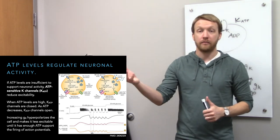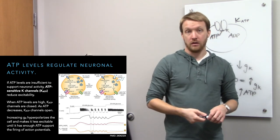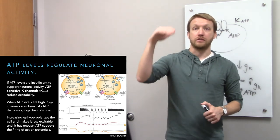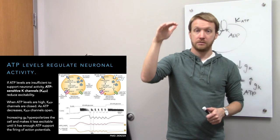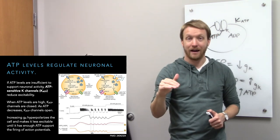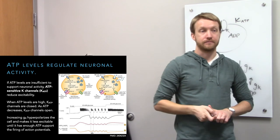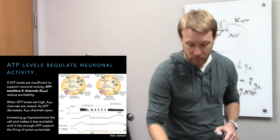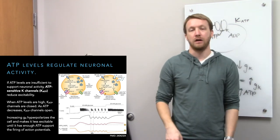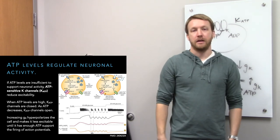When glucose is bumped further to 20 millimolar, ADP levels skyrocket, potassium conductance bottoms out, and you see a much higher level of activity. This is true in neurons as well as other cell types. You've got to be able to pay the bill.